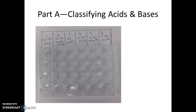To do this, obtain a 24-well plate from the front of the lab room and wash it thoroughly with soap and water, doing a final rinse with deionized water. Once you have your clean micro well plate, position it on a white piece of paper horizontally, which will give you six columns and four rows as shown here.